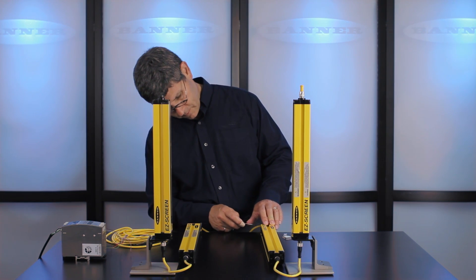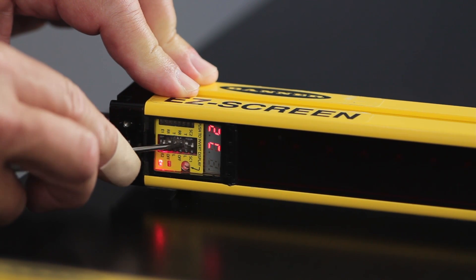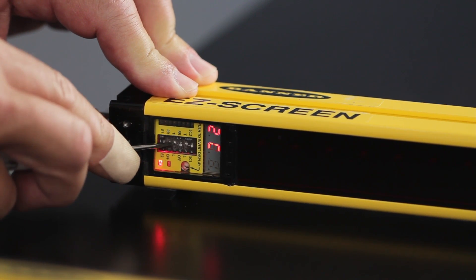Now we need to move the dip switches back to a run condition. In this case we're going to move them back to trip, off, trip, off.